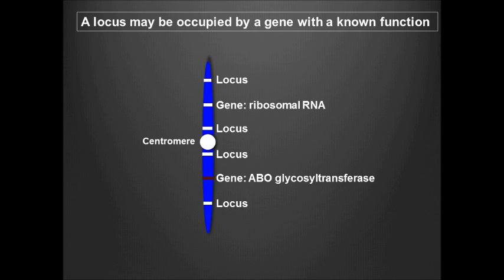For example, two loci on this chromosome are occupied by genes. One gene produces ribosomal RNA, the enzymatic component of ribosomes. The second gene produces a protein, the ABO glycosyl transferase enzyme, which determines the ABO blood group in humans.